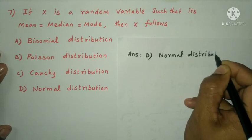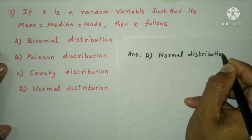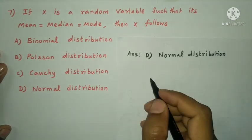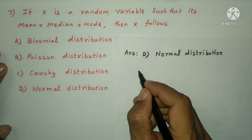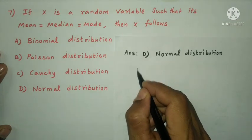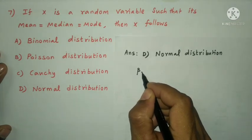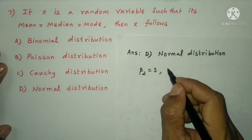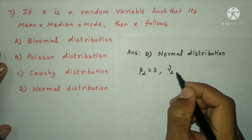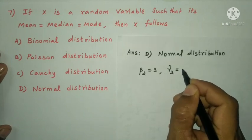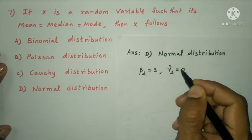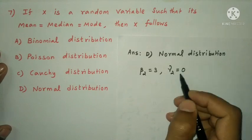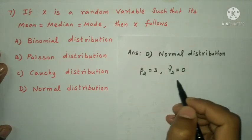Normal distribution is a symmetric distribution. Its coefficient of kurtosis, beta₂ = 3, and gamma₂ = 0. The normal distribution curve is symmetric about mu.